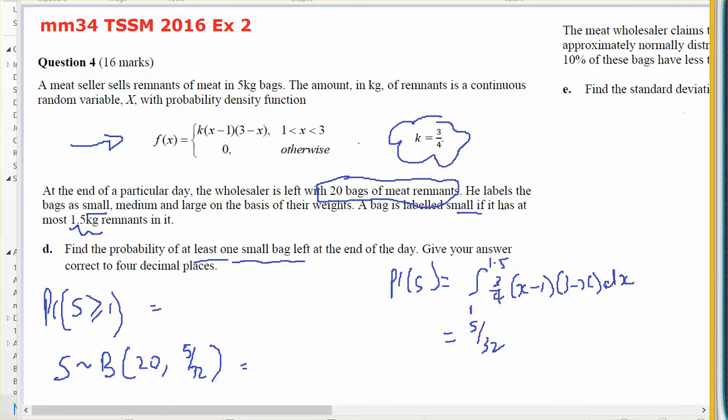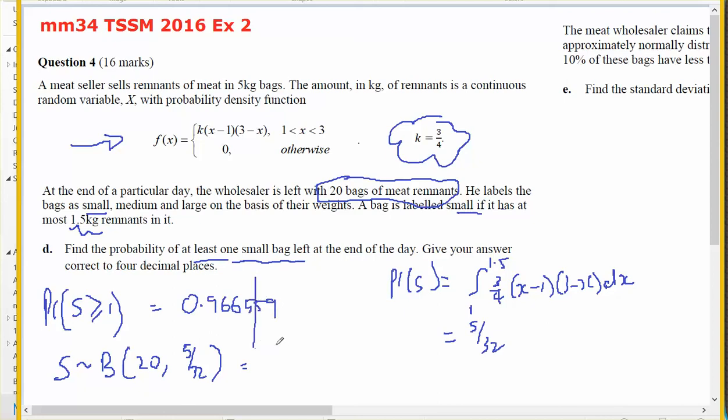And that is 0.966559. I'm doing 4 decimal places. So 0.9666 should be the probability that I've got at least one small bag.